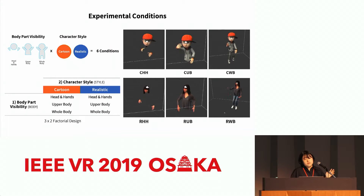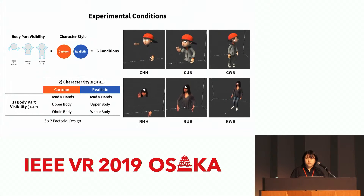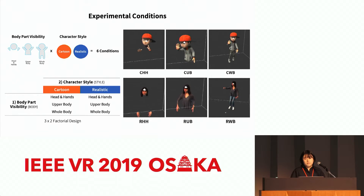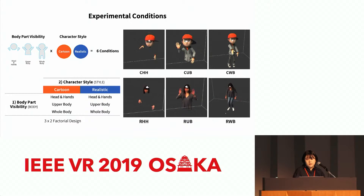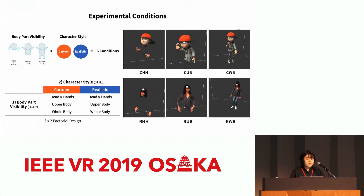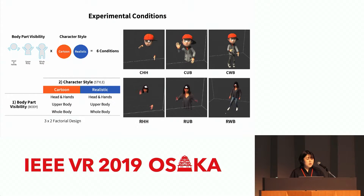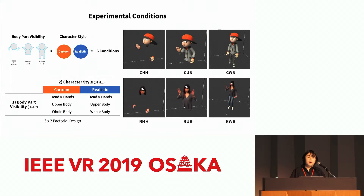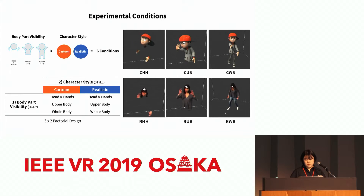As shown in the previous slides, according to existing systems and research trends, two main factors are body part visibility and character style. In terms of body part visibility, three levels were set: head and hands, upper body, and whole body. Character style was divided into two types: cartoon and realistic.